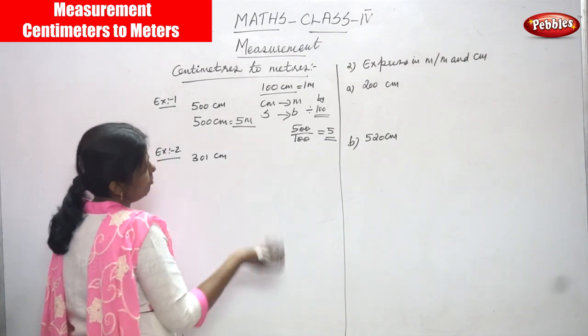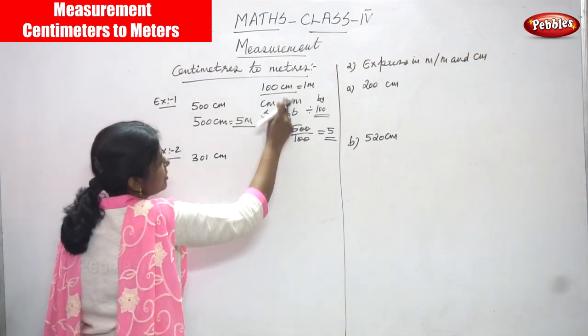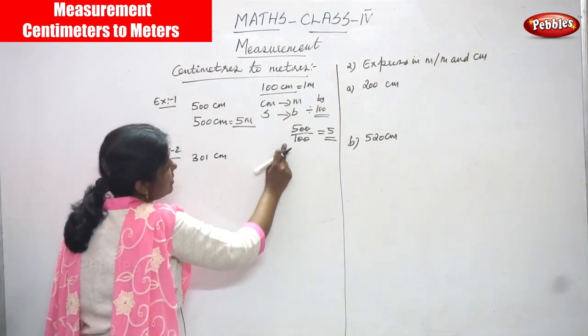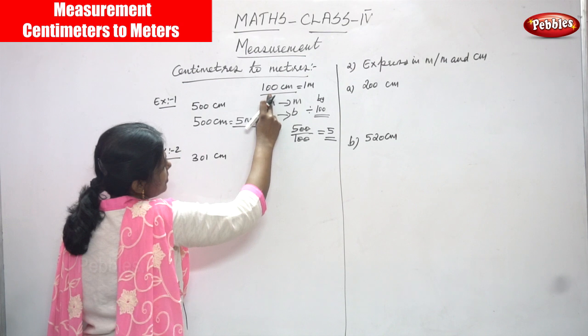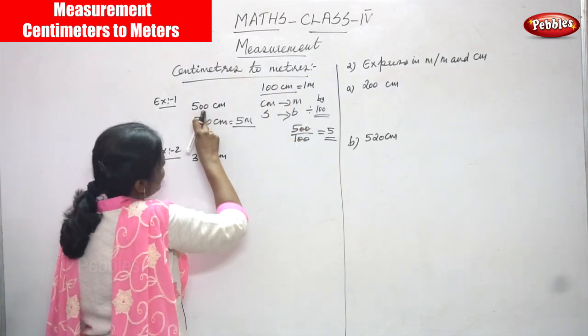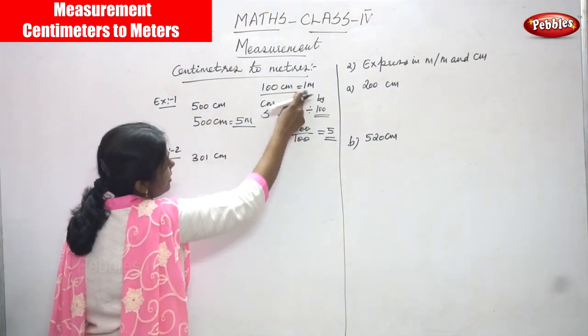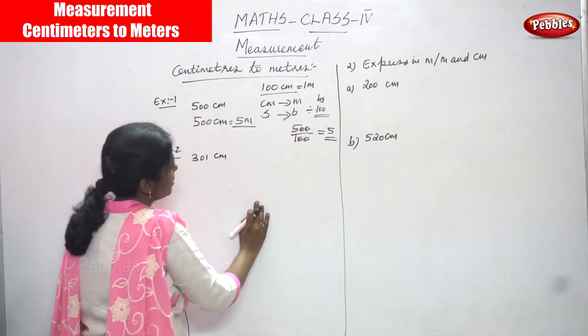Otherwise you have to memorize the formula: 100 centimeters equals 1 meter. This is one method. So 500 centimeters — you can get what? 1 into 5, you can get 5 meters.